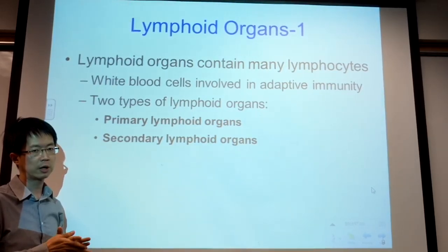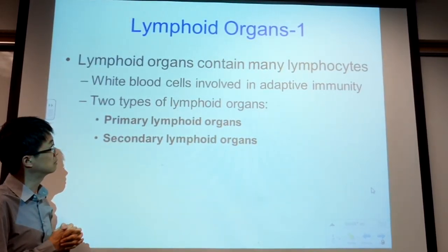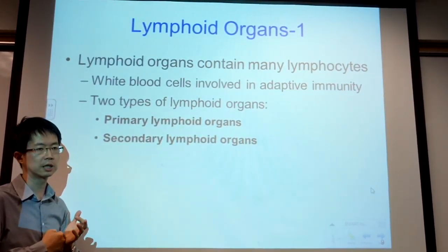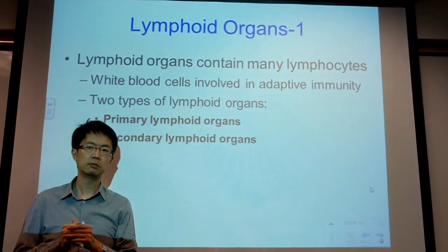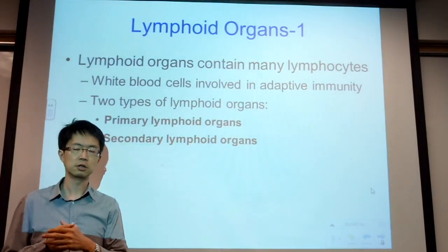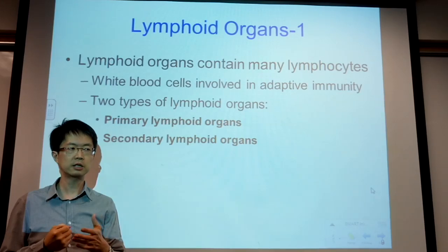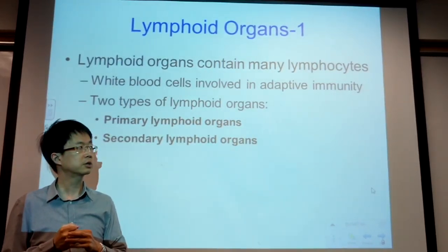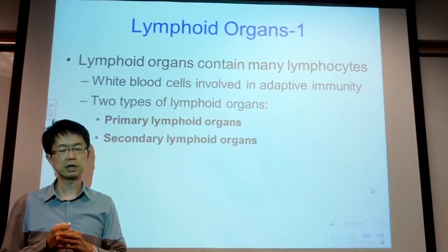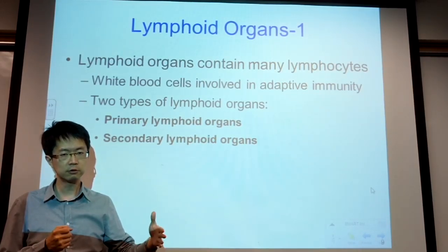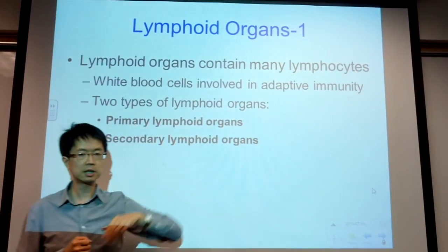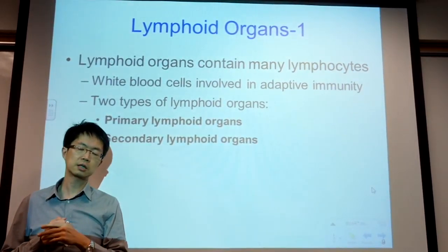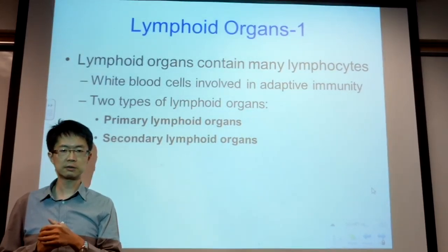Lymphocytes are one of the five types of white blood cells. Adaptive immunity refers to the formation of antibodies. For example, after you get the flu, you become immune to that particular strain of the flu virus because the body develops immunity to it — we call this adaptive immunity.